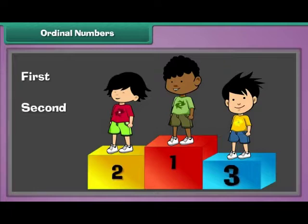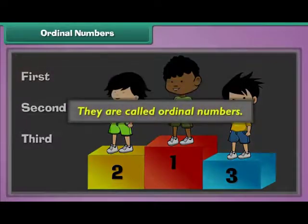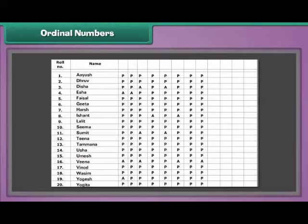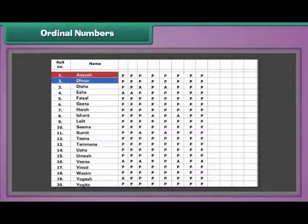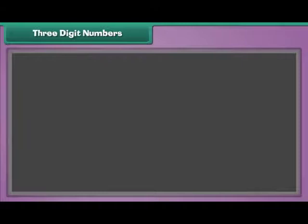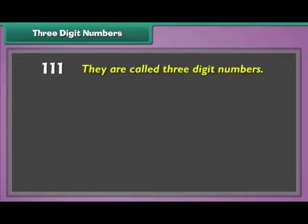Words like first, second, third, etc. are used to indicate positions. Such numbers are called ordinal numbers. For example, there are twenty students in a class. Ayush's name is written first in the attendance register, and another student's name is at the tenth position.